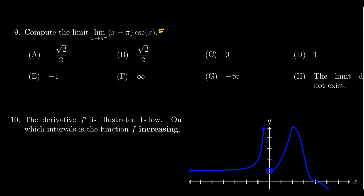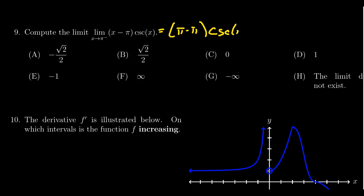If we just plug in pi for x, we're going to get pi minus pi times cosecant of pi, which ends up with zero for pi minus pi, but then cosecant at pi.